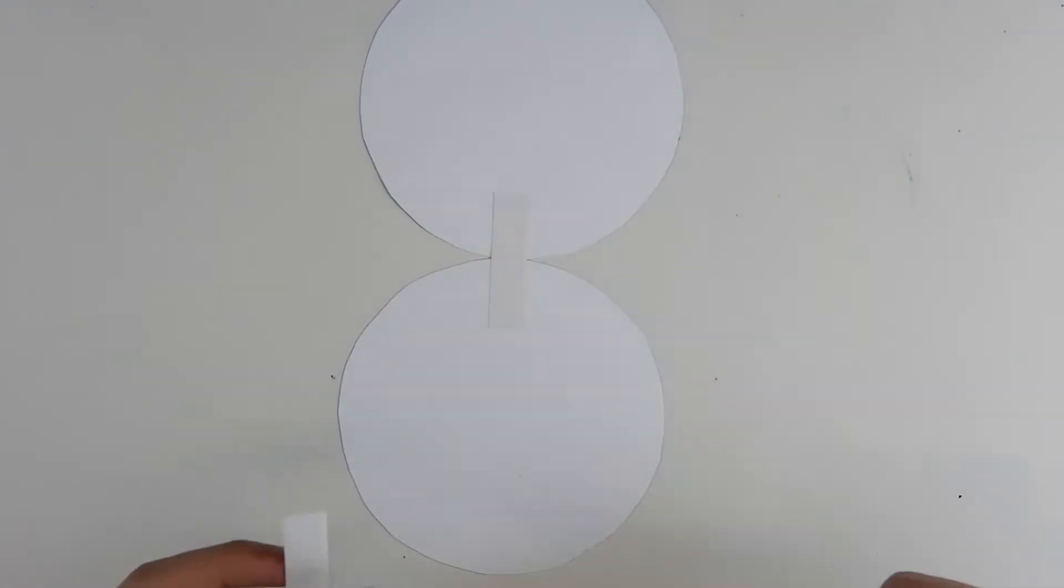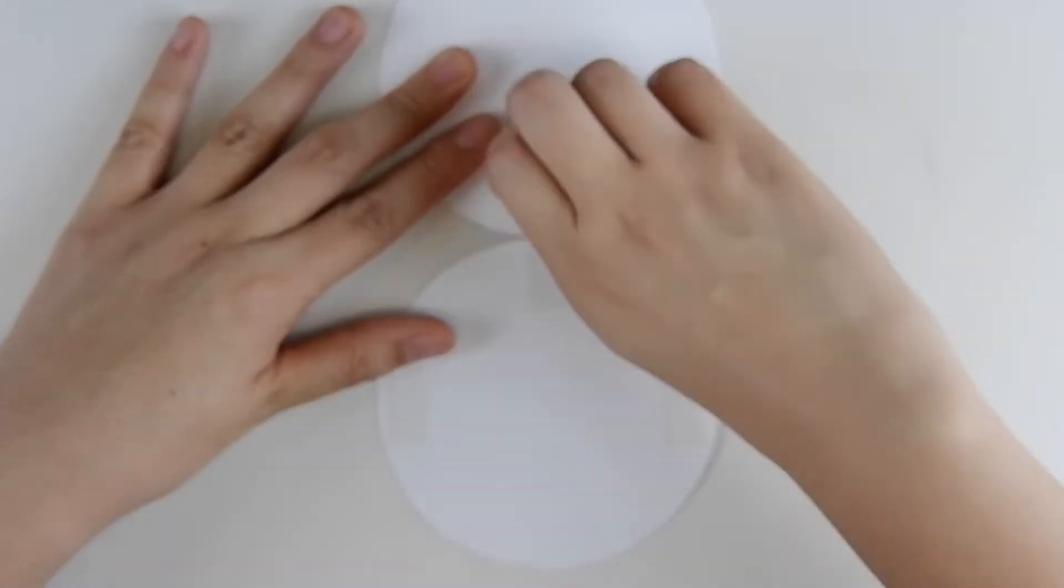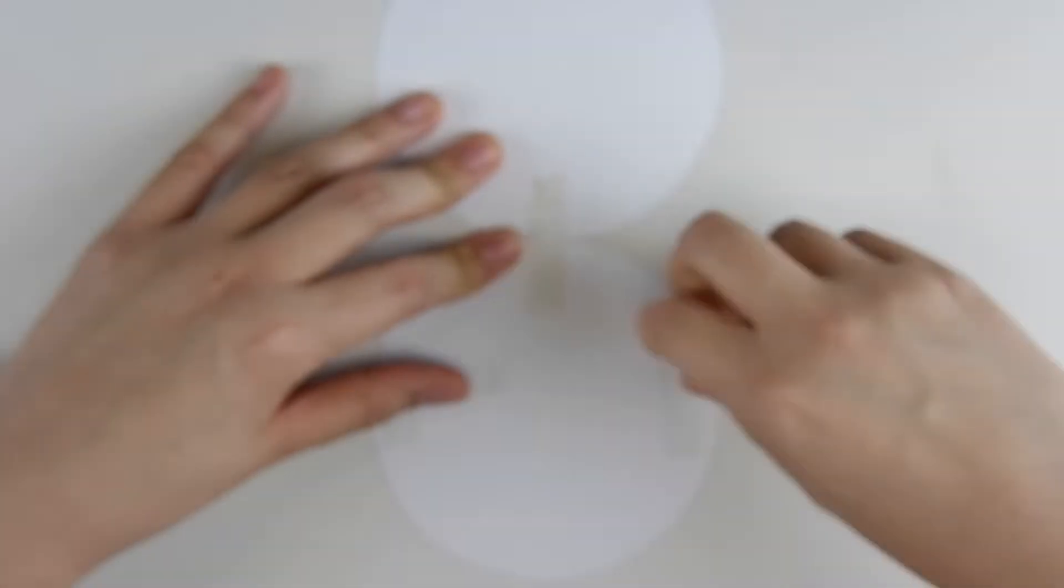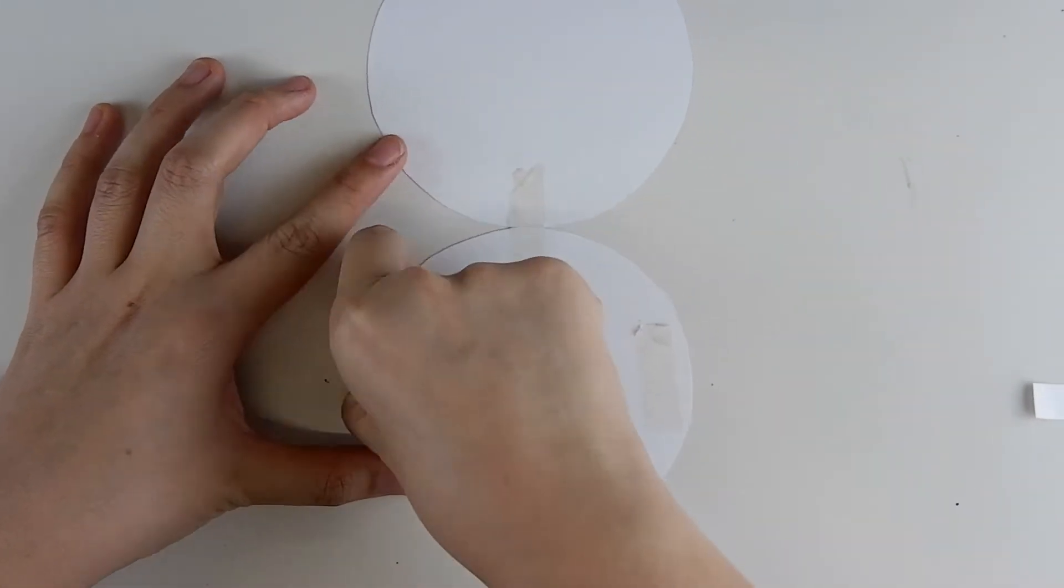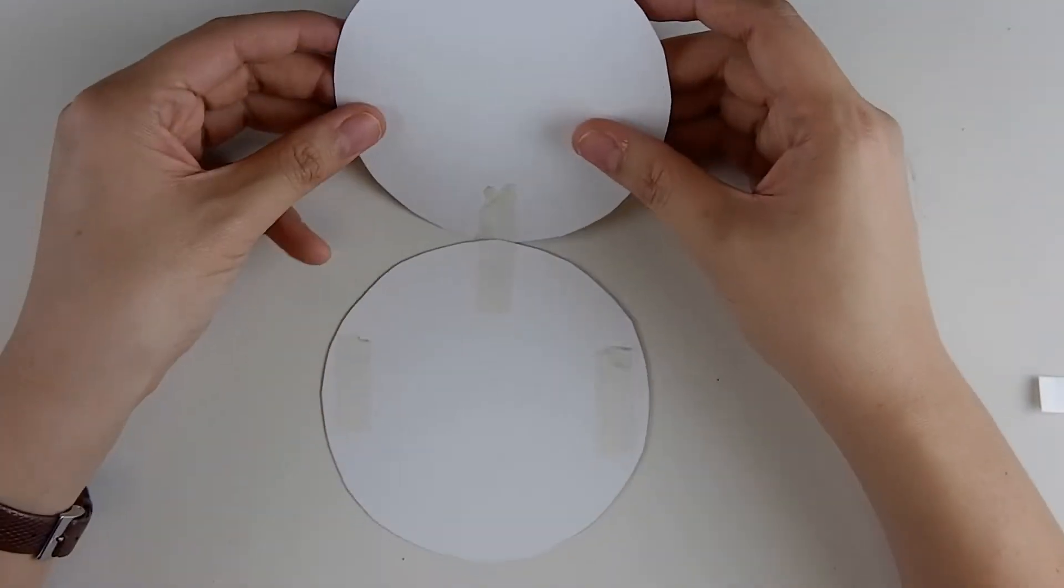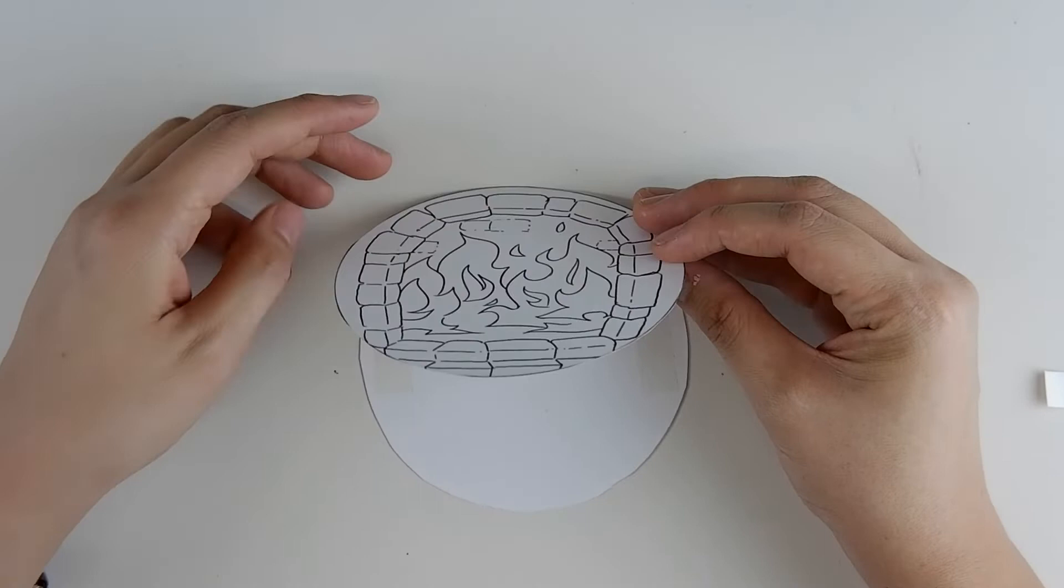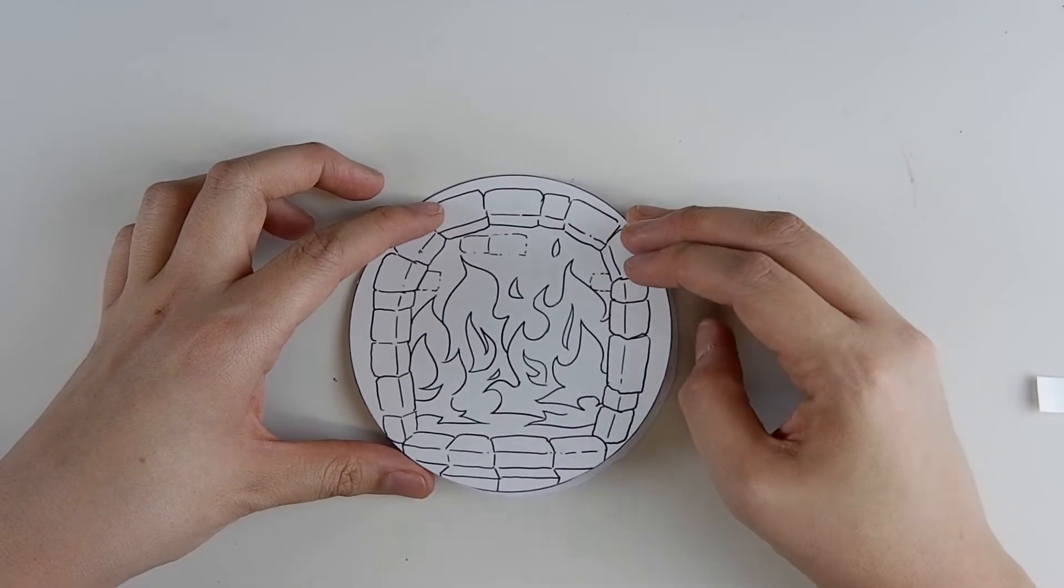Once you've aligned the circles, flip them over and place double-sided tape at the left and right side. Leave the bottom open as we will be inserting the pencil there later. Now, you can fold the opposite circle over to seal and stick both circles together.